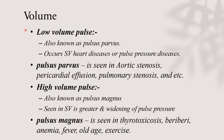Disturbances in volume include low volume pulse and high volume pulse. Low volume pulse is also known as pulsus parvus; it occurs in supraventricular heart diseases or decreased pulse pressure, and is seen in aortic stenosis, pericardial effusion, and pulmonary stenosis. High volume pulse is also called pulsus magnus, seen in conditions with widened pulse pressure, including thyrotoxicosis, beriberi, anemia, fever, old age, and exercise.